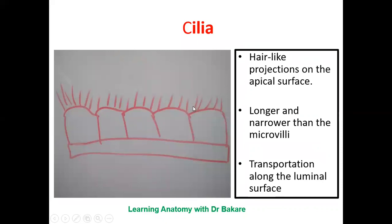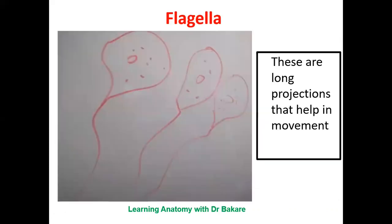The apical surface can also present cilia — longer and narrower projections that enhance transportation along the lumen of the structures they are lining. The cilia flip backward and forward, generating impulse that pushes structures within the lumen downward. There is also a flagellar presentation — a long projection seen on the apical surface that is programmed for movement. As they flip, they tend to swim fast. Flagella are also sensitive to changes in the microenvironment, such as temperature or pressure.